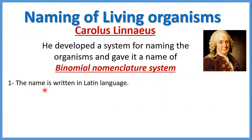أول حاجة: the name is written in Latin language — اختار اللغة اللاتينية علشان يعمل nomenclature للliving organisms. ليه اختار اللاتين؟ عشان هي very old language, not subjected to any change. يعني اللاتين لغة قديمة جداً ومفيش حد بيستخدمها دلوقتي، فمفيش أي تغيرات دخلت عليها. مثلاً في الإنجليزي كلمة 'book' ممكن يبقى معناها the book that we read أو book a ticket — أكتر من معنى. أما اللاتين كل كلمة ملهاش غير معنى واحد.